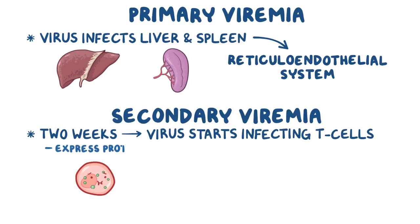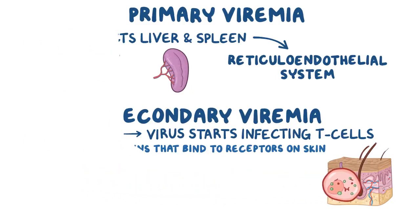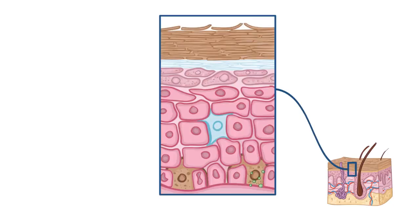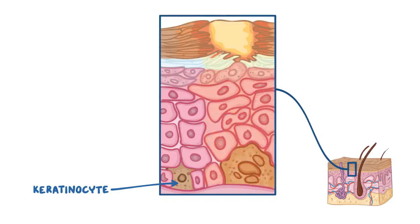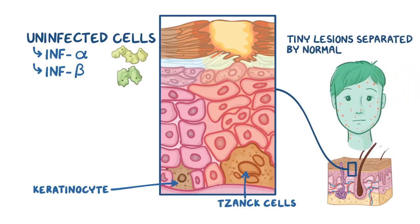Infected T cells start expressing proteins that bind to receptors on skin cells — it's a bit like the virus hitching a ride in the T cell to get to the skin. Once the T cells reach the skin, they release the viruses, which start infecting keratinocytes. The infection spreads through the skin, going directly from cell to cell. Sometimes infected keratinocytes fuse together and create giant multinucleated cells called Tzanck cells. Uninfected cells start secreting interferons alpha and beta, which inhibit viral protein synthesis and protect those cells from infection. As a result, we get tiny lesions on the skin separated by normal areas of skin.